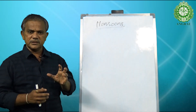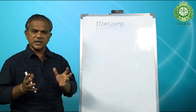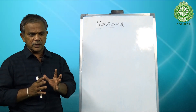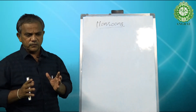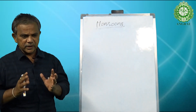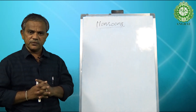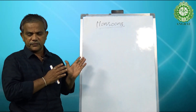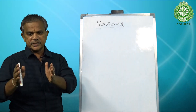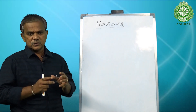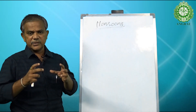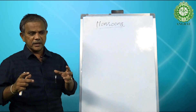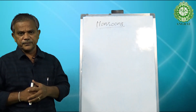Monsoons are essentially seasonal winds — or periodic winds. We already have the concept of sea breeze and land breeze, where air moves from the land surface to the sea and from the sea to the land. When we scale up the concept of sea breeze and land breeze, we can understand the concept of monsoons.